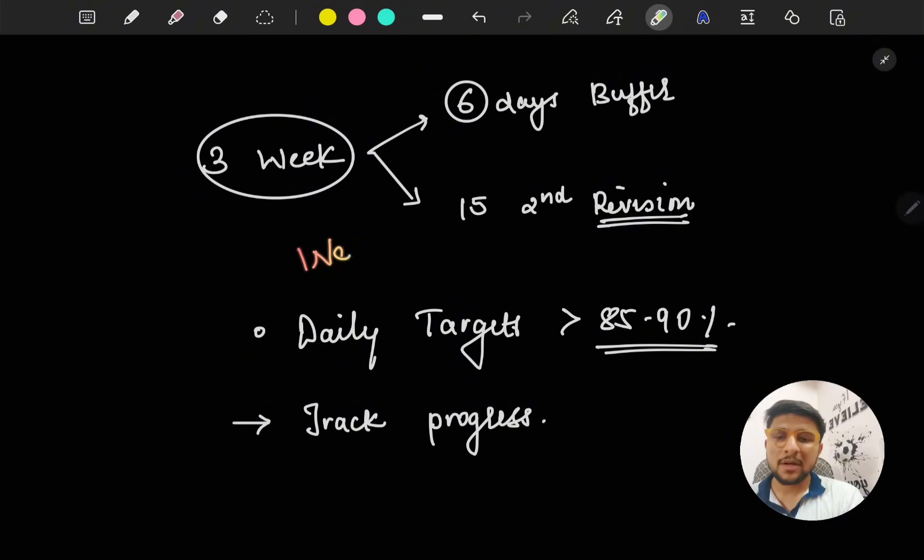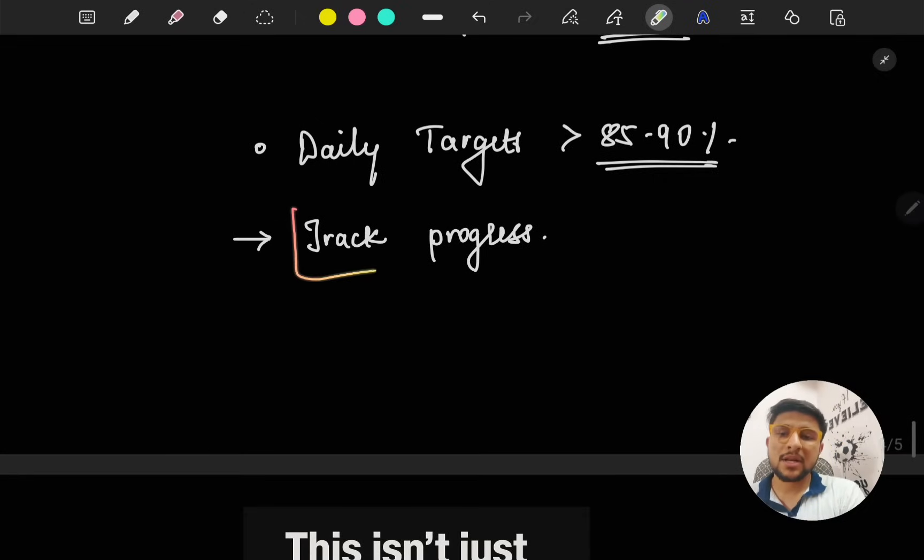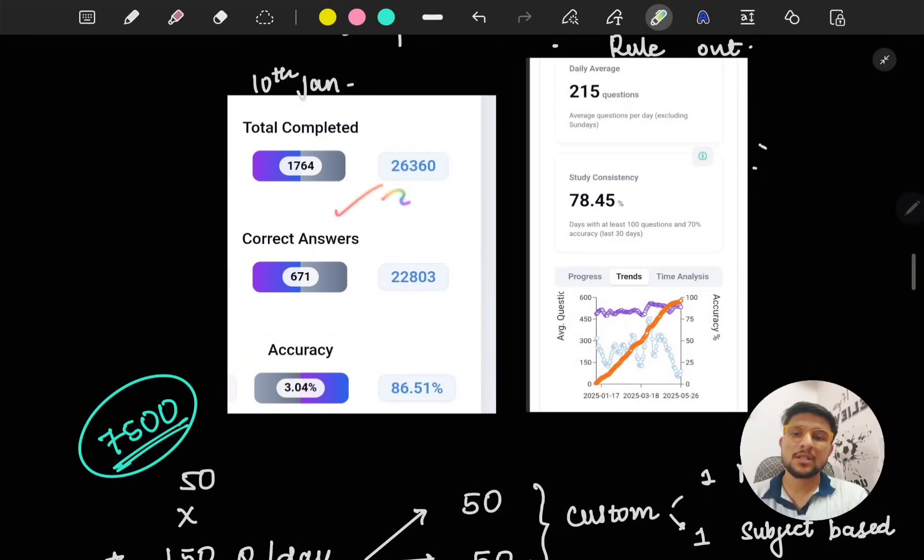Have a weekly timetable. Every Sunday, make a weekly timetable for what you need to do next week, what your targets are. Then add daily targets to it and try to achieve at least 85 to 90% of that. If you're doing that continuously, you'll score to your maximum potential, whatever you have. Track the progress. As I showed, I used to track progress of everything - how many questions I'm doing, whatever it is. Try to track your progress.